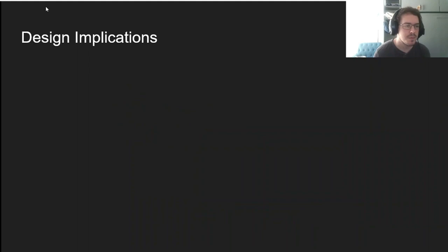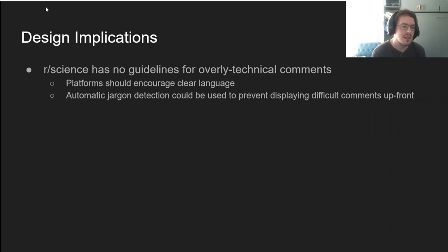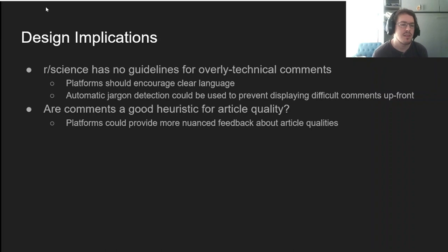To cap off with some design implications, right now r/science has no guidelines for overly technical comments. But the results of our study suggest that platforms should encourage clear language free of difficult technical jargon. We could also imagine how automatic jargon-detecting techniques could be used to prevent displaying difficult comments up front. And finally, are comments actually a good heuristic for article quality? Well, our study shows how comments can influence expectations of science articles regardless of what's actually in those articles.